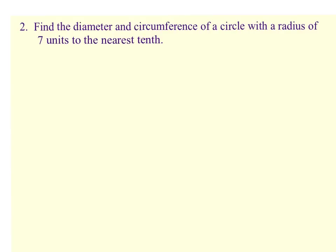Number two, find the diameter and circumference of a circle with a radius of 7 units to the nearest tenth. So here's our circle. We know that radius is the measure from the center of the circle out to a point on the circle. If that's 7 units, then in order to find the diameter, we would just double that.